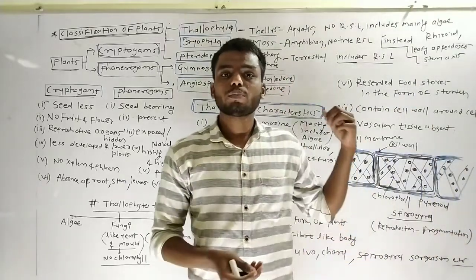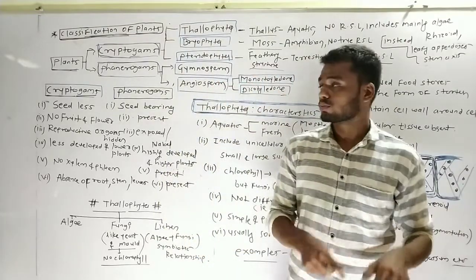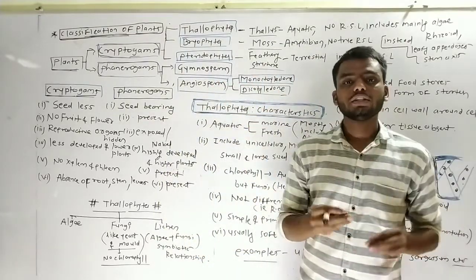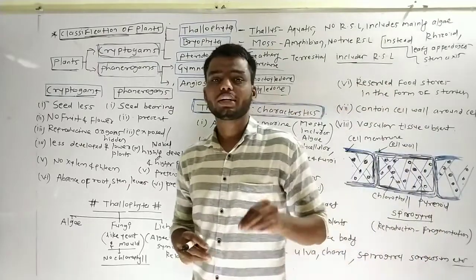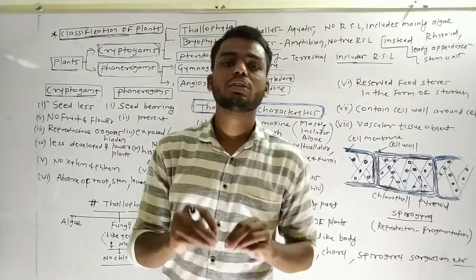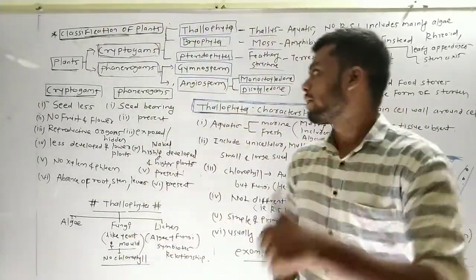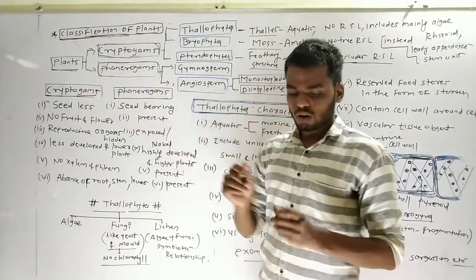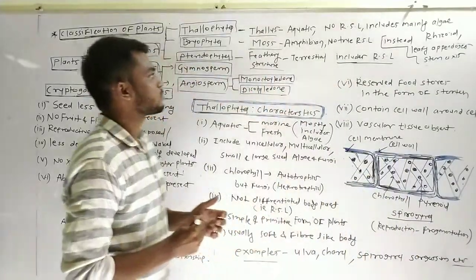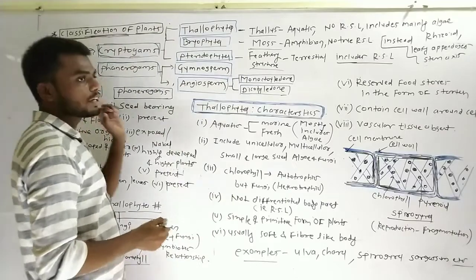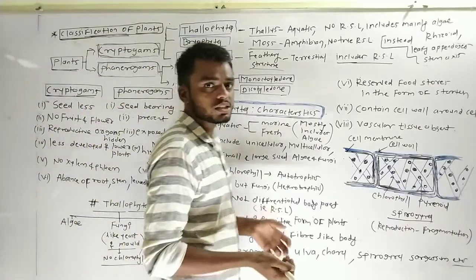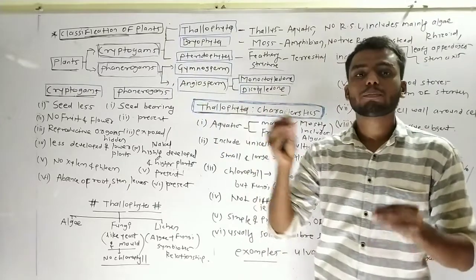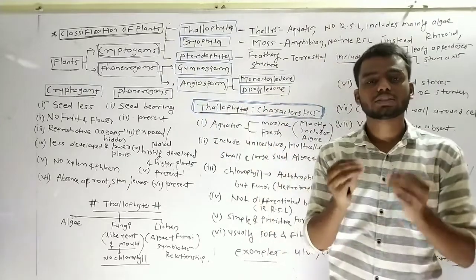We also discussed the main difference between Cryptogamae and Phanerogamae. If you are new to my channel, the link to that lecture is given in the description. Cryptogamae means plants without seeds, and Phanerogamae means plants bearing seeds or plants which produce seeds.